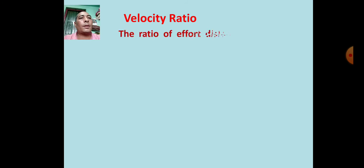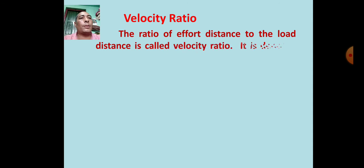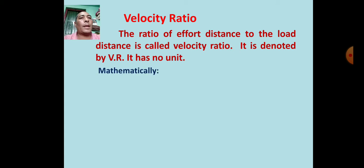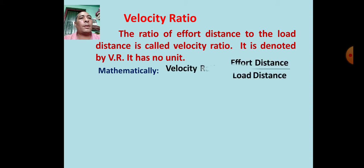The ratio of effort distance to the load distance is called velocity ratio. It is denoted by VR. It has no unit. Mathematically, velocity ratio equals effort distance upon load distance.